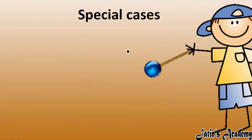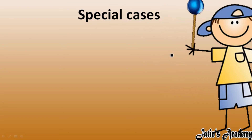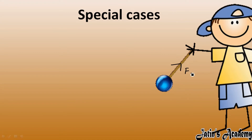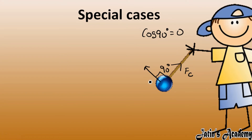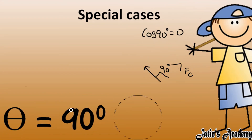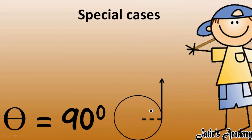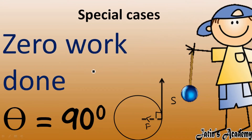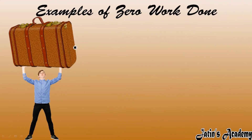Next special case is a rotational case — uniform circular motion. If you remember, there is one centripetal force acting inward and displacement occurs tangentially, so the angle between them is 90 degrees. Cos of 90 degrees gives zero, so this is a special case of zero work done. The direction of force and the direction of displacement are at 90 degrees to each other, making this an example of zero work done.